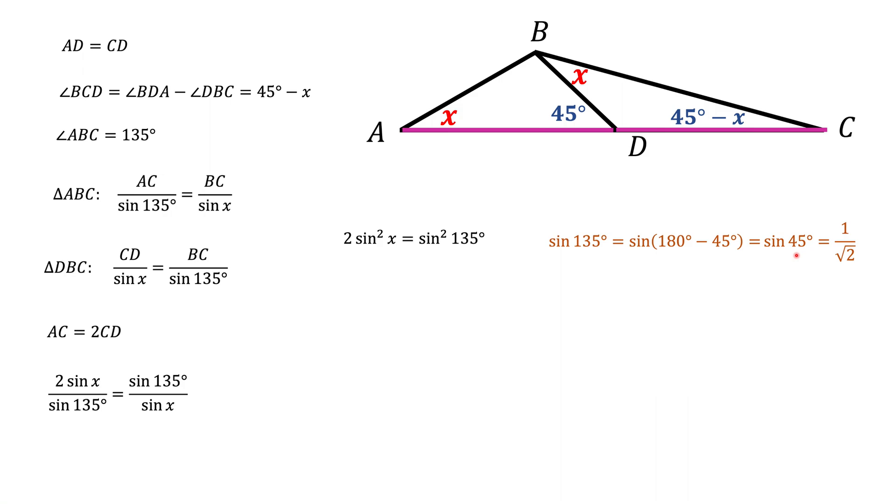And the second thing we need to know is that sine of 180 minus 45 equals sine of 45, and that is 1 over the square root of 2. Here I use the fact that sine of 180 minus any angle Z equals sine of that angle Z.